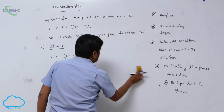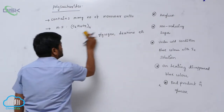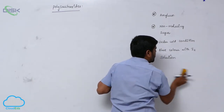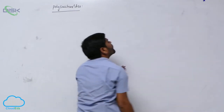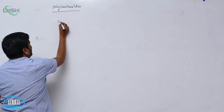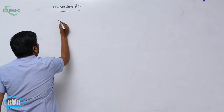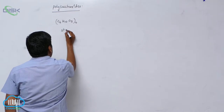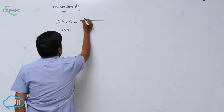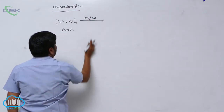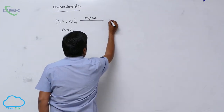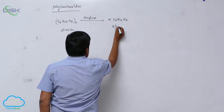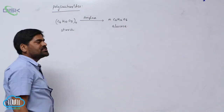Starch contains two types of units: one is amylose, and the other is amylopectin. The amylase enzyme, which is present in saliva, acts on starch and gives many number of glucose units.